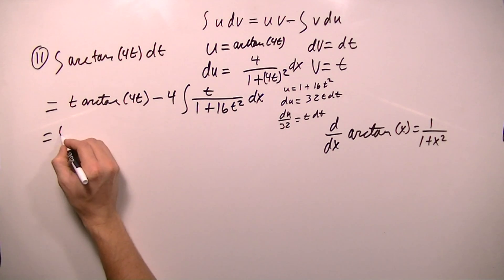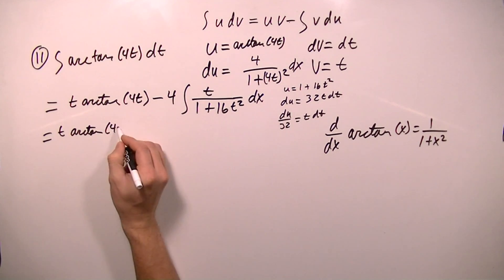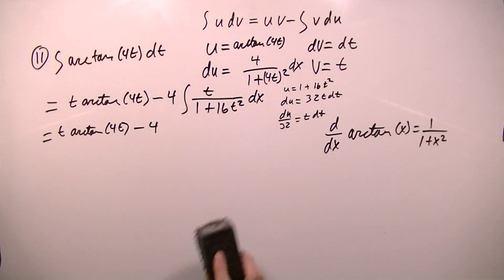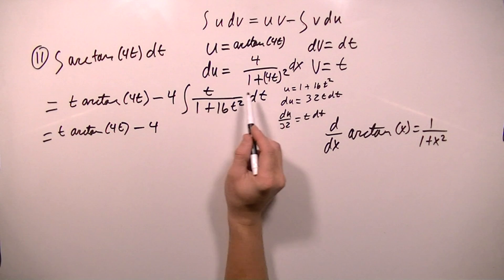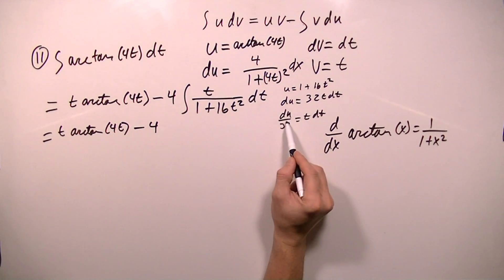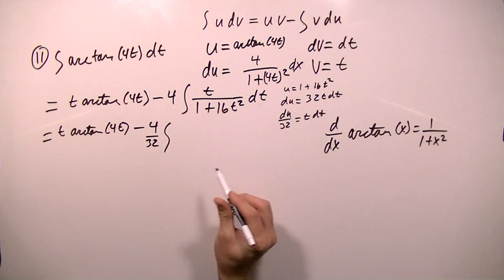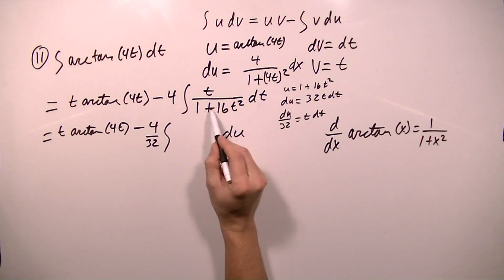So I'm going to rewrite all of this. t arctan 4t minus 4. And it looks like I made a mistake here. This should have been dt. So I'm going to make the substitution, and t dt is going to be du over 32. So I'm going to factor out this over 32. And then I'm going to have the integral. And this is going to be du. And the bottom here becomes u. So it's just going to be 1 over u.